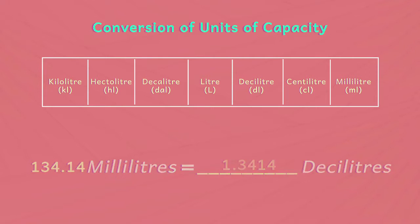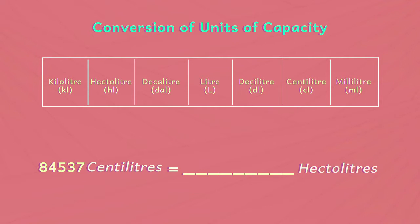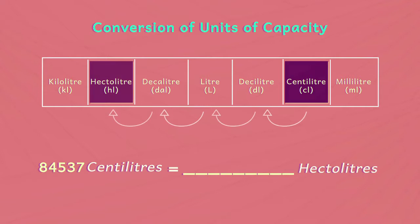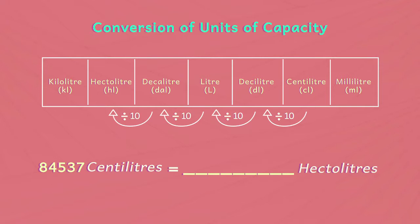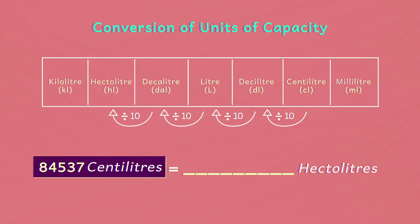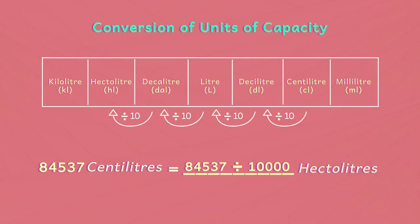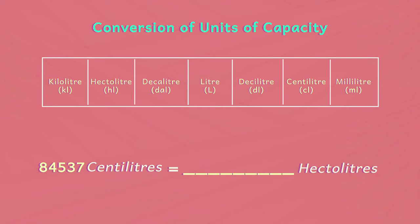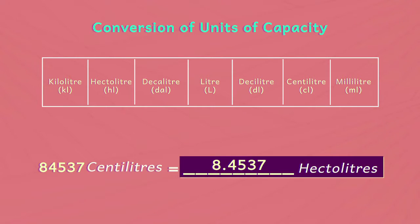Let us take another example. Convert 84,537 centilitres to hectolitres. Hectolitre is four steps to the left of centilitre, so we divide centilitres by 10,000. Therefore, 84,537 centilitres equals 84,537 ÷ 10,000 = 8.4537 hectolitres.